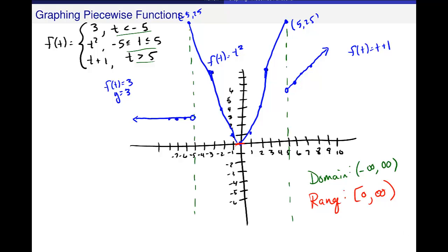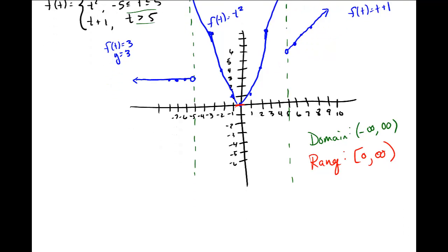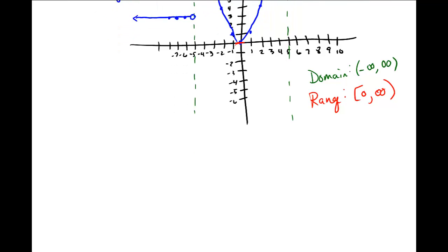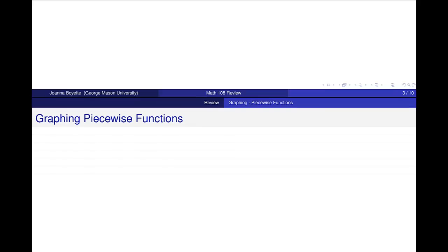Let's try one more. I just want to do one more example to make sure. Piecewise functions are pretty important in the study of calculus and especially in limits that we'll be talking about in just a few days. So graph f(x) equals x minus 1 when x is less than or equal to 0, and x plus 1 when x is greater than 0.